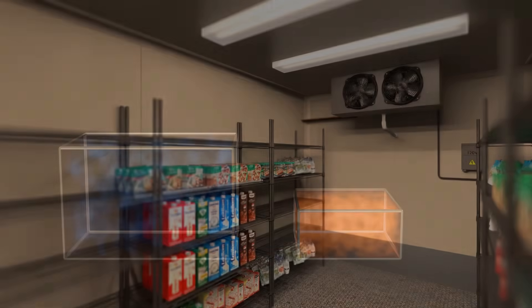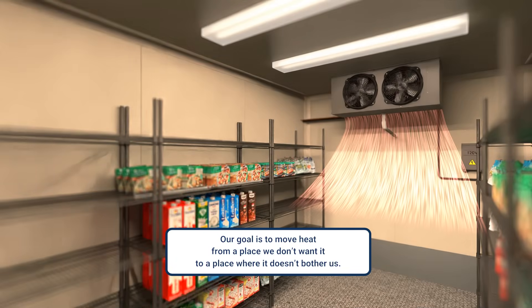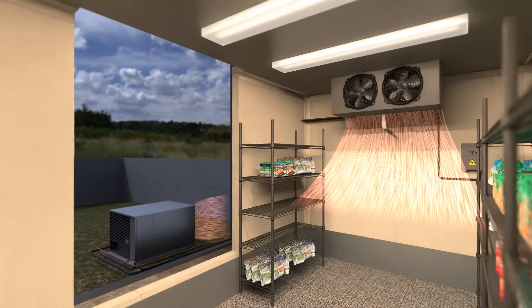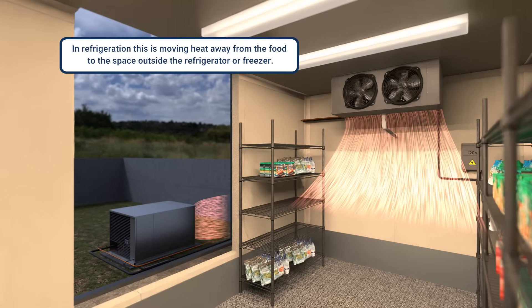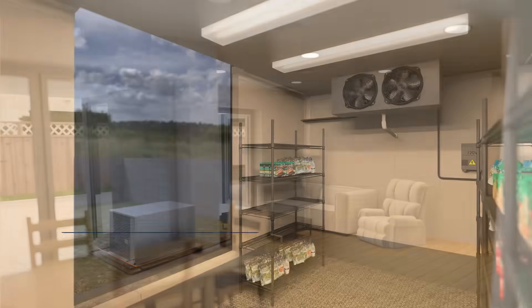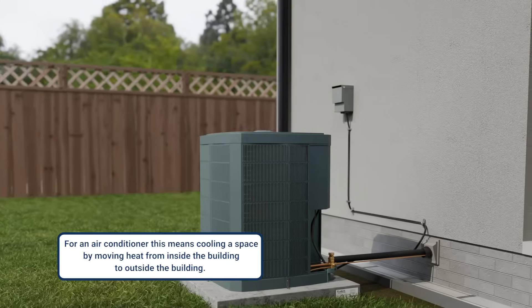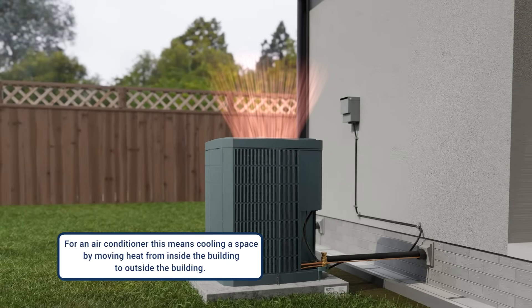Our goal is to move heat from a place we don't want it to a place where it doesn't bother us. In refrigeration, this means moving it away from the food to the space outside of the refrigerator or the freezer. For an air conditioner, this means cooling a space by moving heat from inside the building to outside the building.